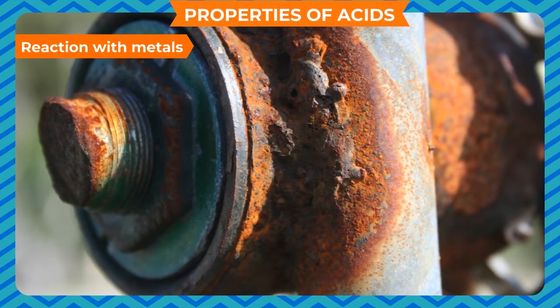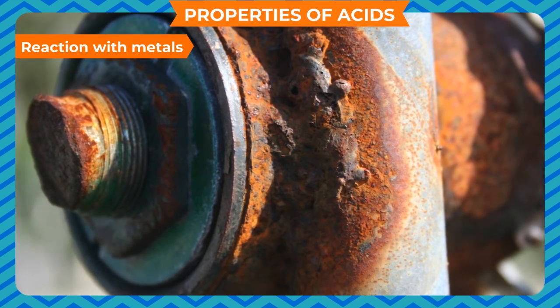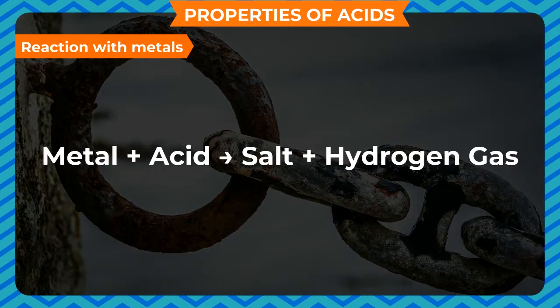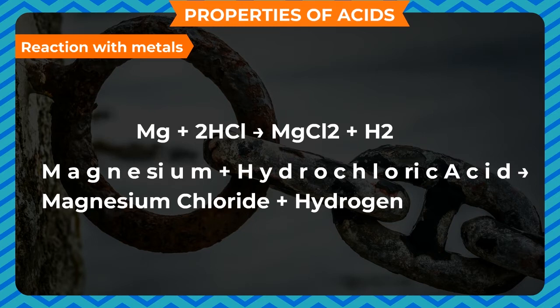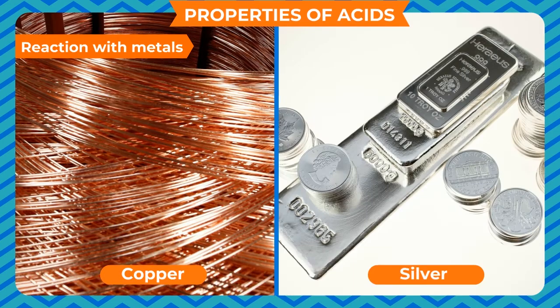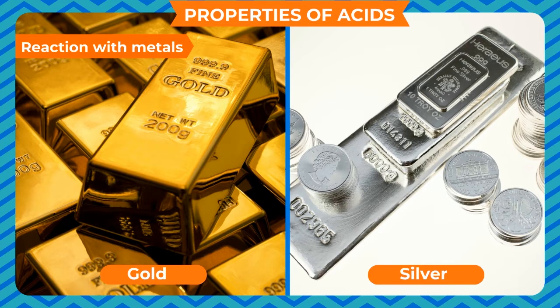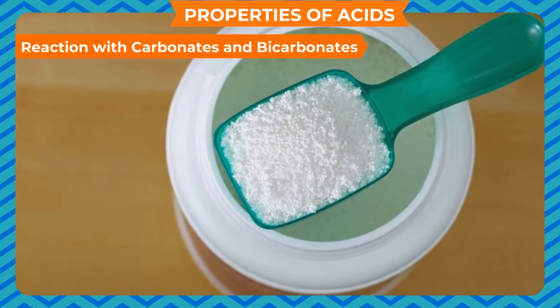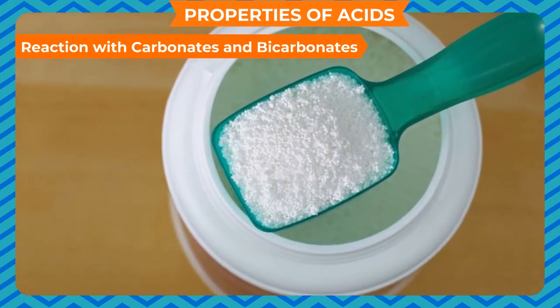Chemical properties — reaction with metals: hydrogen present in an acid is replaced by the metal, and hydrogen gas is set free. Metal + acid → salt + hydrogen gas. For example: magnesium + hydrochloric acid → magnesium chloride + hydrogen; iron + sulfuric acid → iron(II) sulfate + hydrogen. Less reactive metals like copper, silver, and gold cannot replace hydrogen from acids.